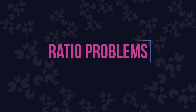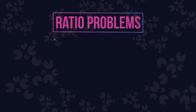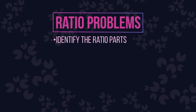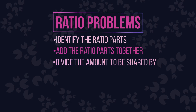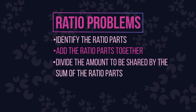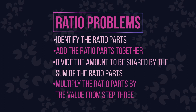Here are some important things to remember when it comes to any ratio problem. Firstly, identify the ratio parts. Secondly, add the ratio parts together. Thirdly, divide the amount to be shared by the sum of the ratio parts. And finally, multiply the ratio parts by the value from step three.